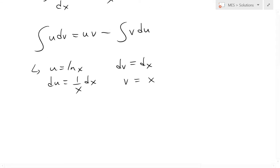So now we could plug this inside. So we get u which is ln x, dv which equals dx, equals u which is ln x times v which is x. Let's put that on the left side.